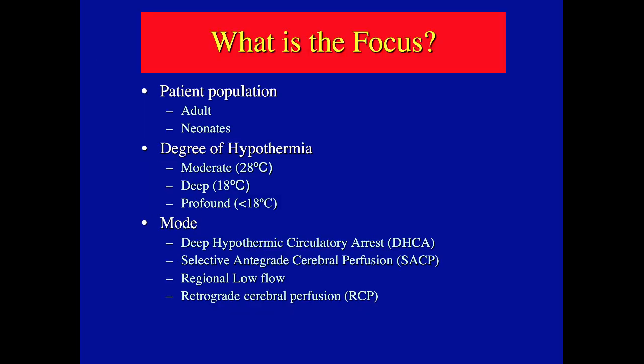When talking about alpha stat and pH stat, it's important to understand the patient population — adults versus neonates — and the level of hypothermia. With mild hypothermia there's very little difference between the two strategies because the temperature difference is small. Remember, alpha stat and pH stat converge at 37 degrees — they're identical. With deep hypothermia, the differences become very significant.